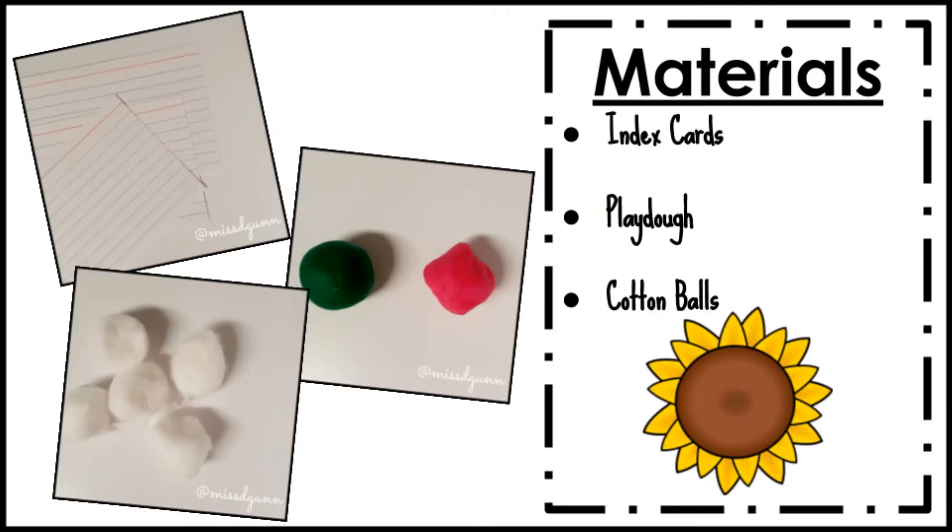Some materials that I recommend for this mini lesson are index cards or a whiteboard, or anything that you have that you'll be able to write equations on, as well as play-doh or cotton balls, or anything that your learner will be able to have plenty of to show both sides of the equal sign.